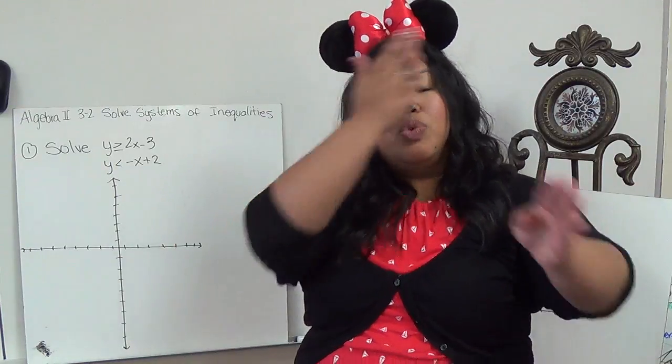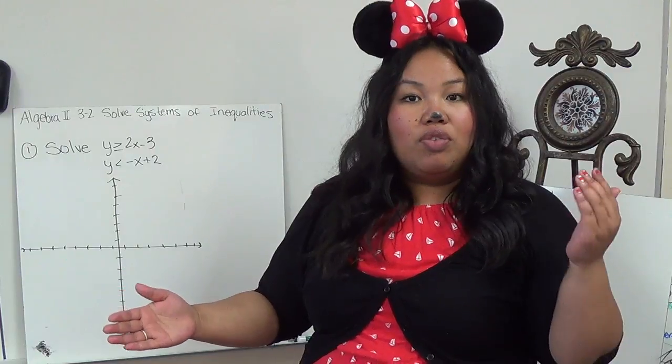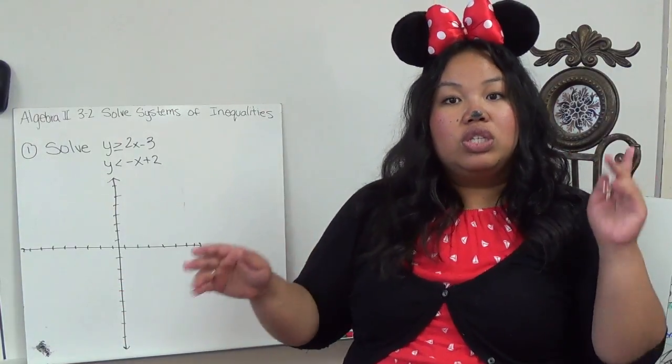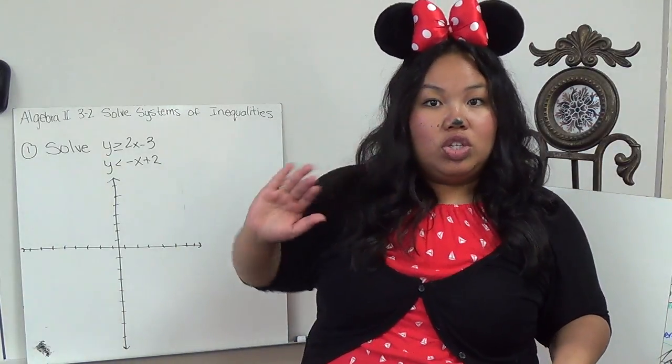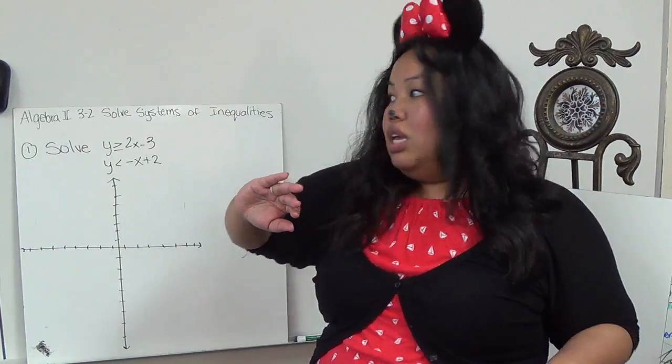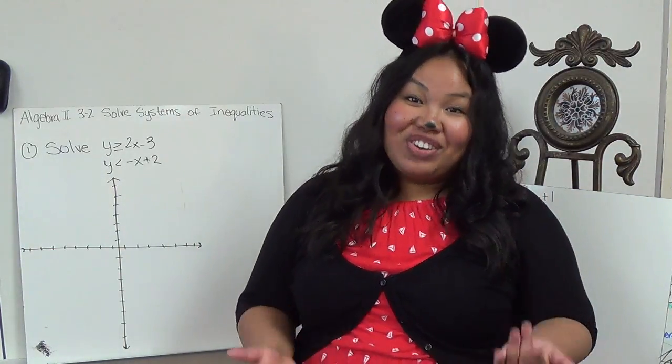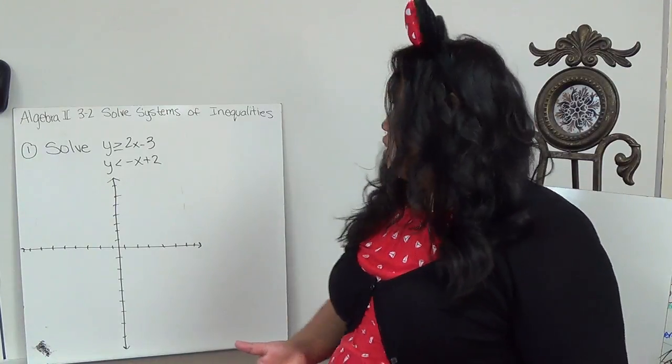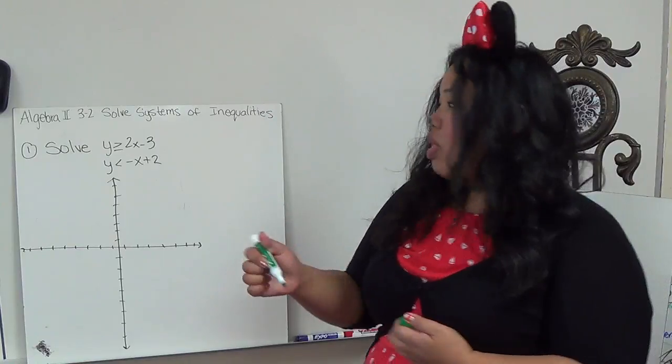When we're dealing with lines and where they intersect with systems of equations, whenever the two equations intersect, that's their solution. Well, with inequalities, their solution is a shaded region. So wherever the shaded region overlaps, that's where our answer is.